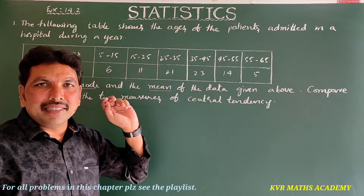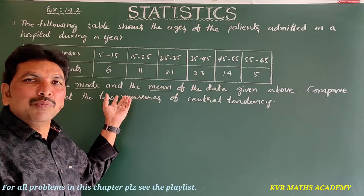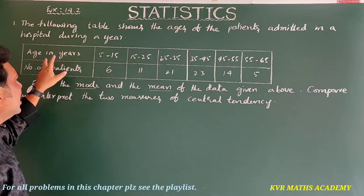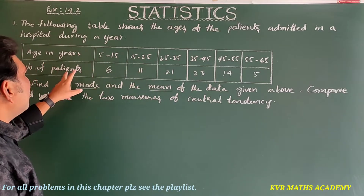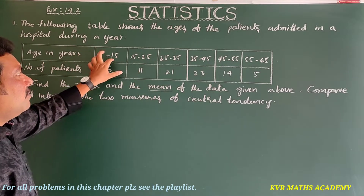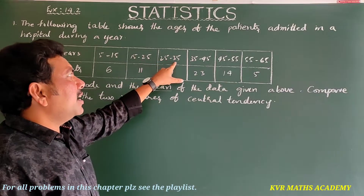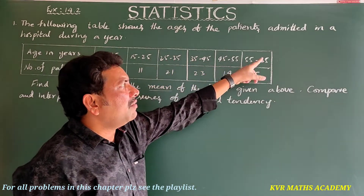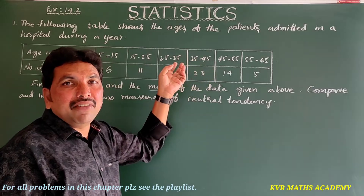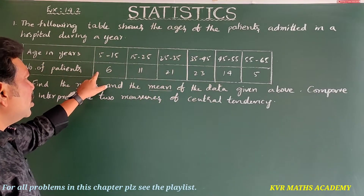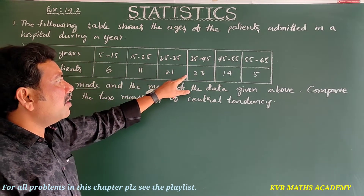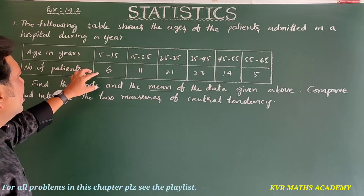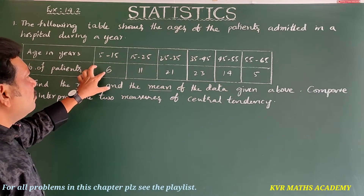Here the table gives age in years and number of patients. The age intervals are 5–15, 15–25, 25–35, 35–45, 45–55, and 55–65. The corresponding number of patients are 6, 11, 21, 23, 14, and 5.